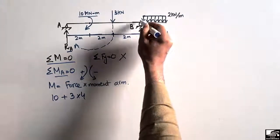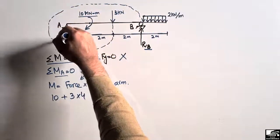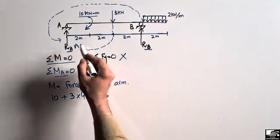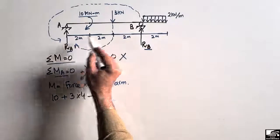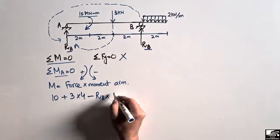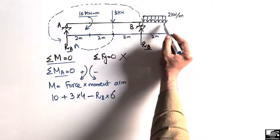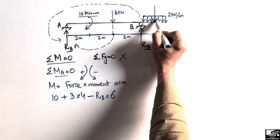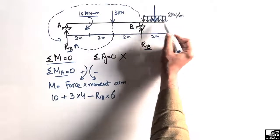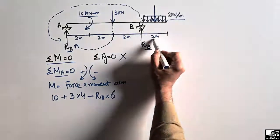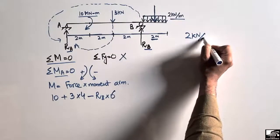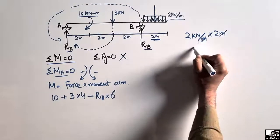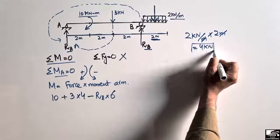RB creates a moment about point A in the anti-clockwise direction, so it is taken as negative: −RB multiplied by the distance from B to A, which is 2 plus 2 plus 2 equals 6 meters. For the uniformly distributed load, converting it to a point load: 2 kilonewton per meter multiplied by 2 meters gives 4 kilonewton, acting at the center of the distributed load.